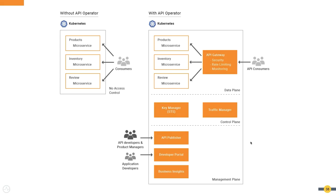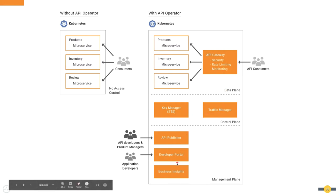For microservices developers with services on Kubernetes, the API operator enables adding a proper managed API layer with security, rate limiting, monitoring, and all relevant policies — with just one or two commands. The micro gateway can run as a sidecar or per-microservice gateway. This is backed by a control plane and management plane providing deeper insights and control over how microservices are consumed.